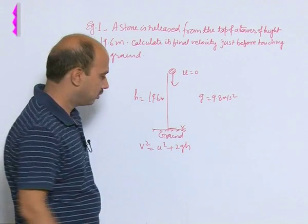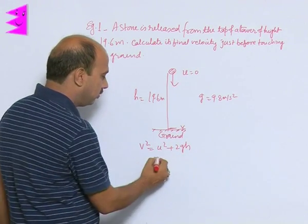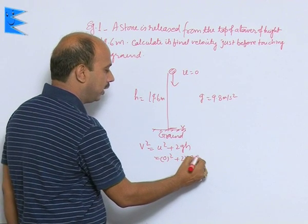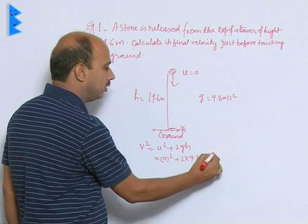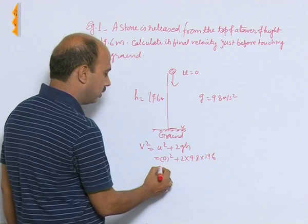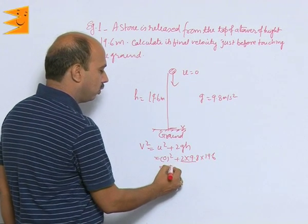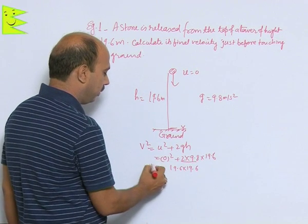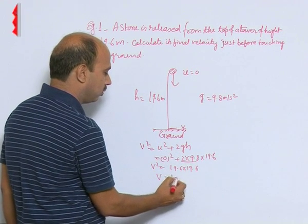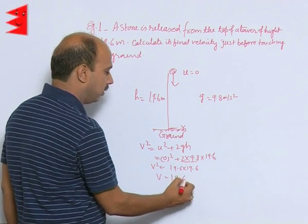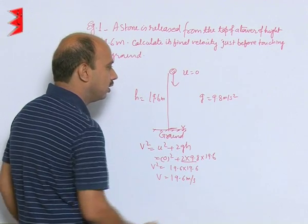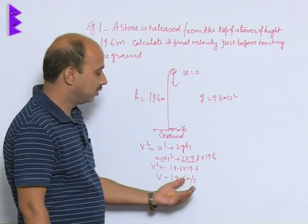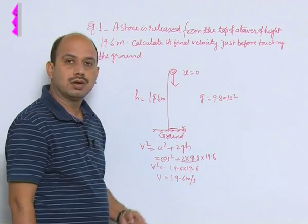Since the body moves downward, g is taken as positive. So: v² = 0 + 2 × 9.8 × 19.6. Now 9.8 × 2 = 19.6, so v² = 19.6 × 19.6. Taking the square root, v = 19.6 m/s. When the ball reaches the ground, it has a velocity of 19.6 m/s.